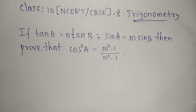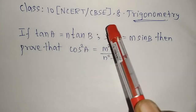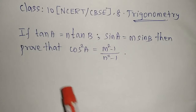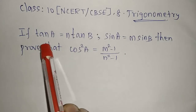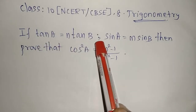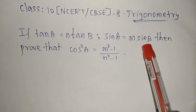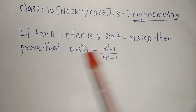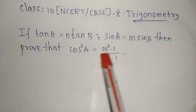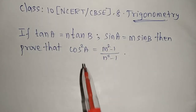Welcome to the channel. Today we are going to see Class 10 NCERT/CBSE Chapter 8 Trigonometry. One important sum: tan A = n·tan B and sin A = m·sin B, then prove that cos²A = (m²-1)/(n²-1).